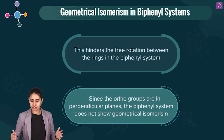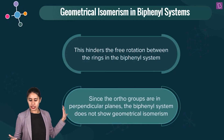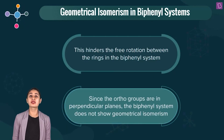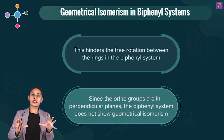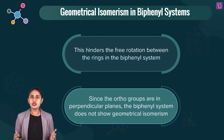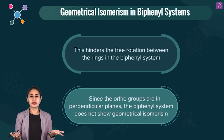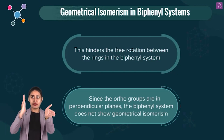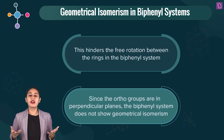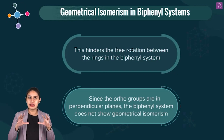This hinders the free rotation between the rings in the biphenyl system. Since the terminal groups are in perpendicular planes, the biphenyl system does not show geometrical isomerism — this is the moral of the story. How will you comment that these groups are on the same side or the opposite side? They need to be in the same plane for us to make that comment, and here they are in different planes.